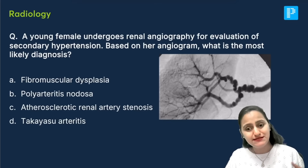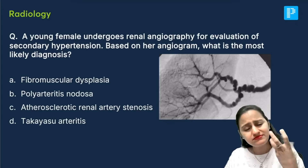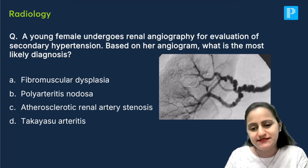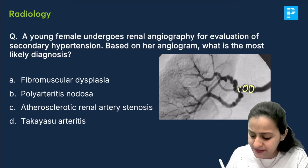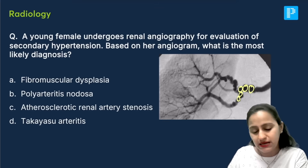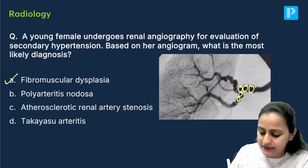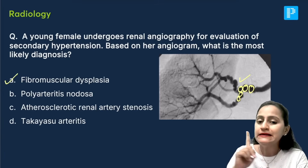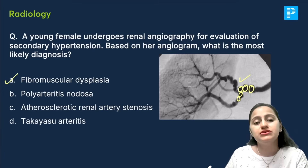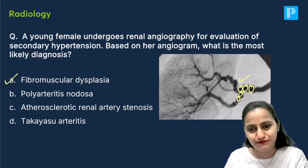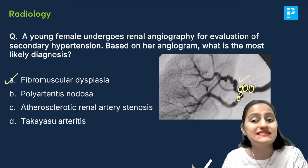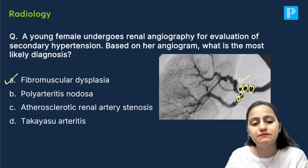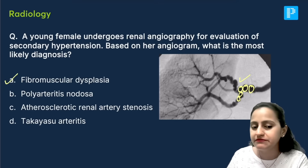The next question asks for the most likely diagnosis in a young female with secondary hypertension. This is a DSA image showing a beaded appearance — string of pearls appearance — of the renal artery, which is fibromuscular dysplasia. Remember: string of pearls sign on DSA is fibromuscular dysplasia. Interestingly, this exam had two questions on string of pearls: one in PCOS and one on DSA for fibromuscular dysplasia. The renal artery showing beaded appearance — this is fibromuscular dysplasia.